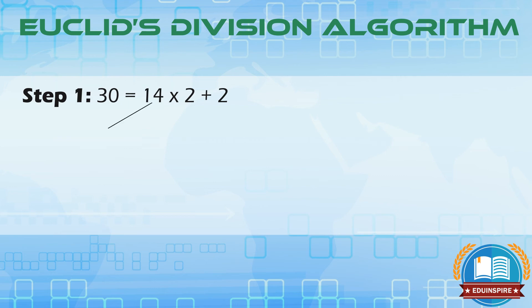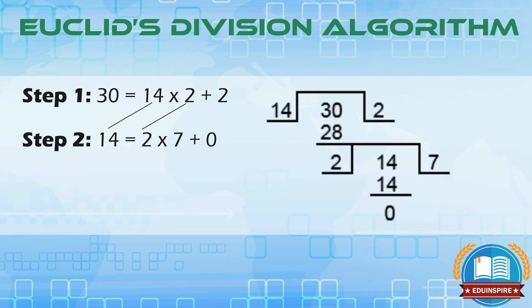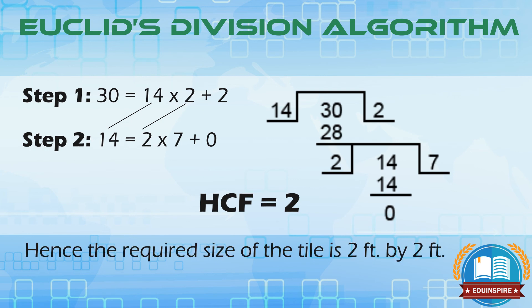As the remainder here is not 0, we proceed to the next step. Step 2 gives us 14 equals 2 into 7 plus 0. As the remainder is 0, so the divisor in the last step becomes the HCF, that is 2. Hence the required size of the tile is 2 feet by 2 feet.